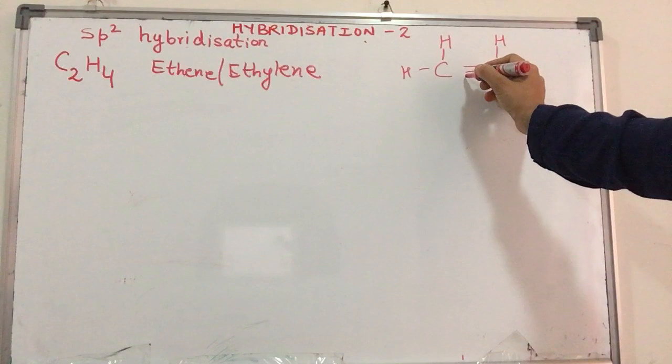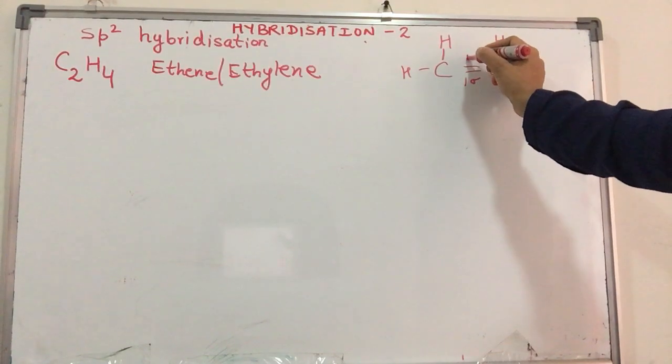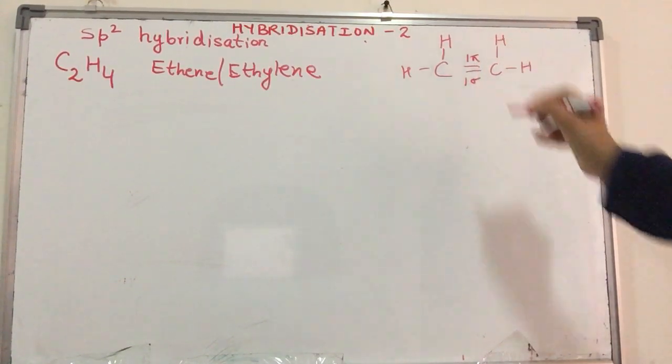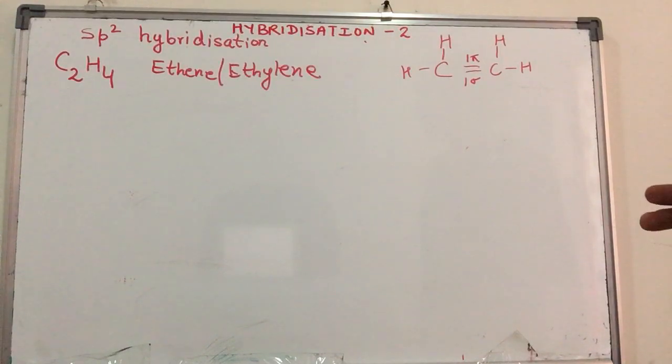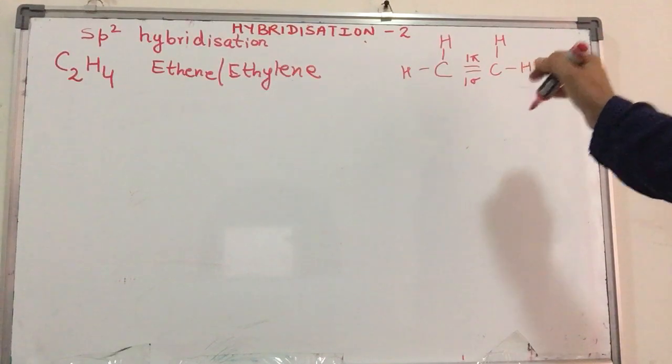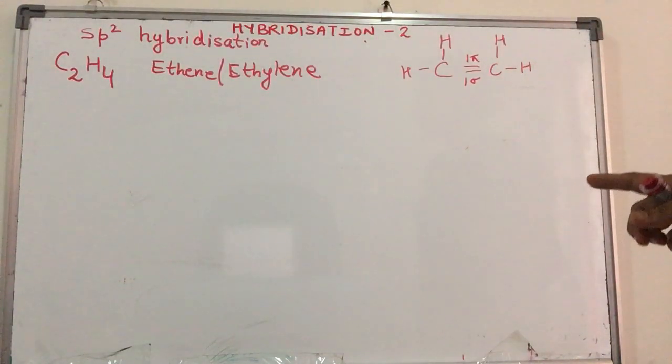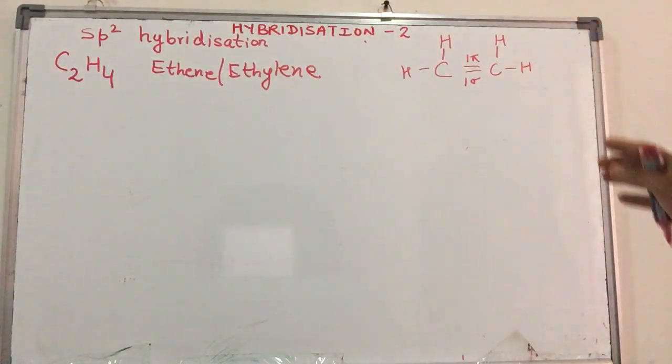Double bond means there will be one sigma and one pi bond. Always remember, there can never be two sigma bonds, two or more sigma bonds between any two atoms. There can only be one sigma bond between two atoms. Yes, there can be two pi bonds between two atoms.